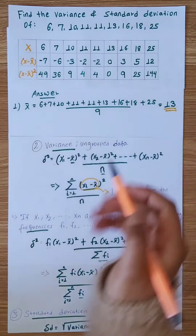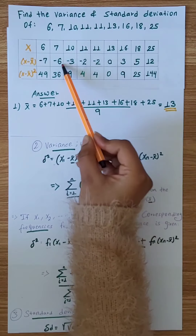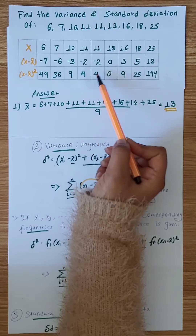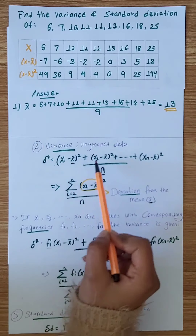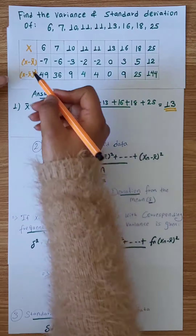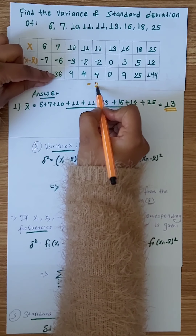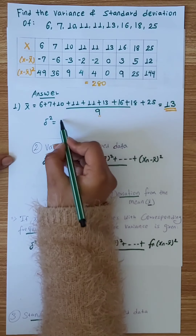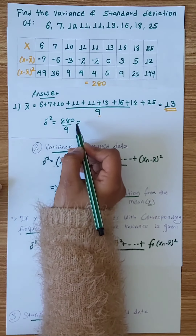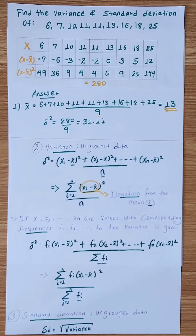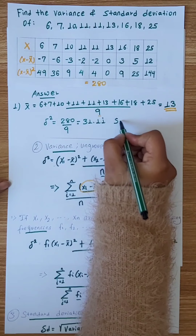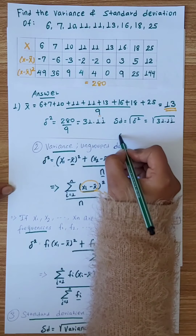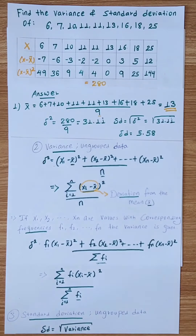We can see the deviation, which is the value of x minus the mean. The square of the deviation gives us the variance. The variance is equal to the sum of squared deviations divided by the number of observations.